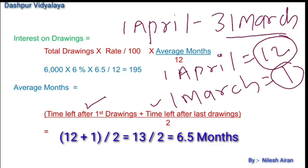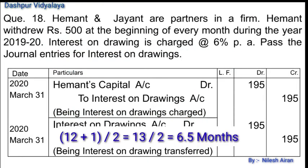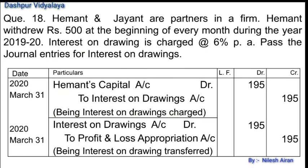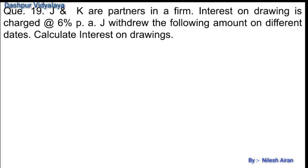Interest on drawings = 500 × 12 = 6000 total drawings, at the rate of 6%, charged for 6.5 months: 6000 × 6/100 × 6.5/12 = rupees 195. So interest on drawings for Hemant is rupees 195.